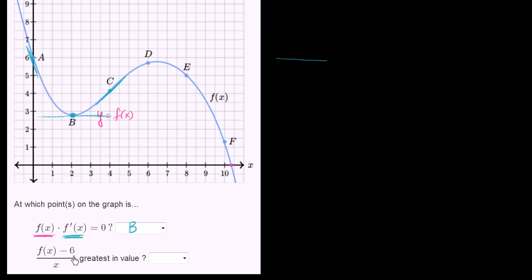Now they have this expression: f of x minus 6, over x — when is that greatest in value? We have to interpret what f of x minus 6 over x actually means. In a differential calculus class, this looks like finding the slope of a secant line. All of what we know about derivatives involves finding the limiting value of the slope of a secant line. If at some point my y value is 6, this could be the change in y, and if the corresponding x value is 0, this would be f of x minus 6 over x minus 0. So do we have the point (0, 6) on this curve? Yes — when x equals 0, f of x equals 6.